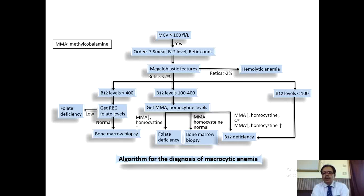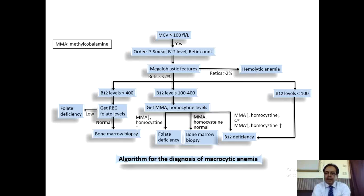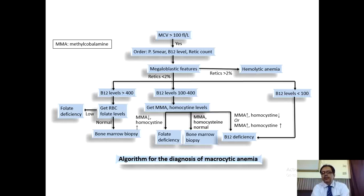Bone marrow biopsy will be required when homocysteine is normal, methylmalonic acid is normal, folate is normal, and B12 is also normal. Remember, if all four — folate normal, B12 normal, homocysteine normal, and methylmalonic acid normal — then you have to go for bone marrow biopsy.